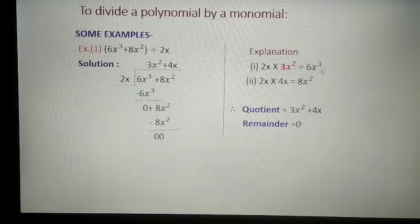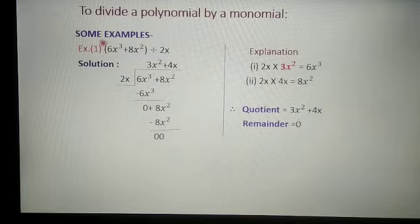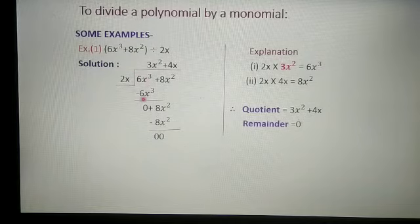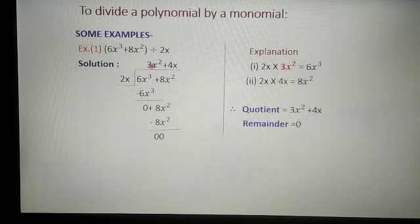Now we will start to divide a polynomial by a monomial. We have just seen monomial by monomial in the last slide. Here, 6x cube plus 8x square is a polynomial, and we are dividing this polynomial by the monomial 2x. One by one we will take: 2x multiplied by what will give 6x cube? That is 3x square. So we write 3x square in the quotient. 2x multiplied by 3x square gives 6x cube.